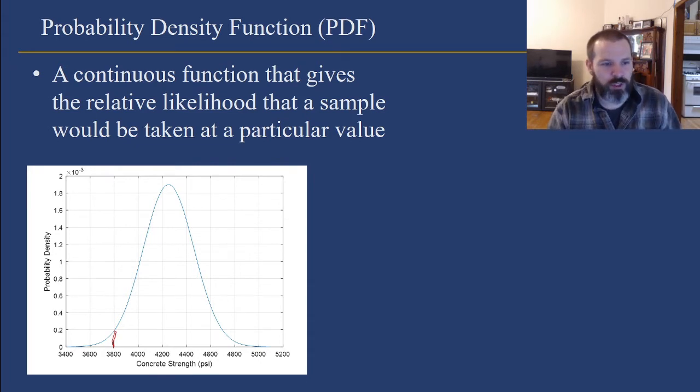What's more important to you is the area between two points or the area under the curve between two points. That in there will give you a probability. There's a probability that this value lies between 3,800 and 4,000.